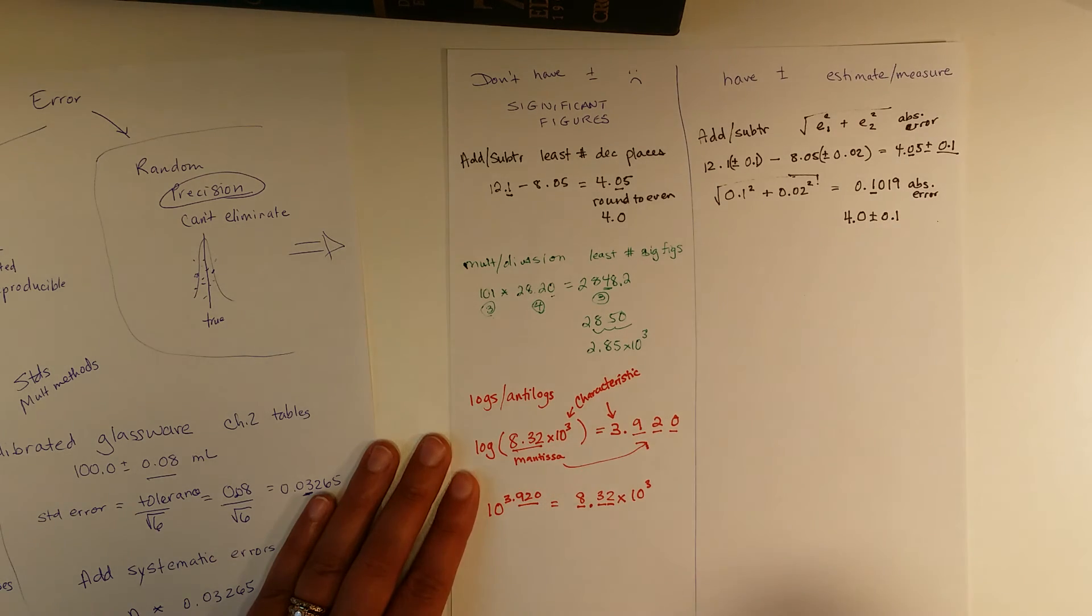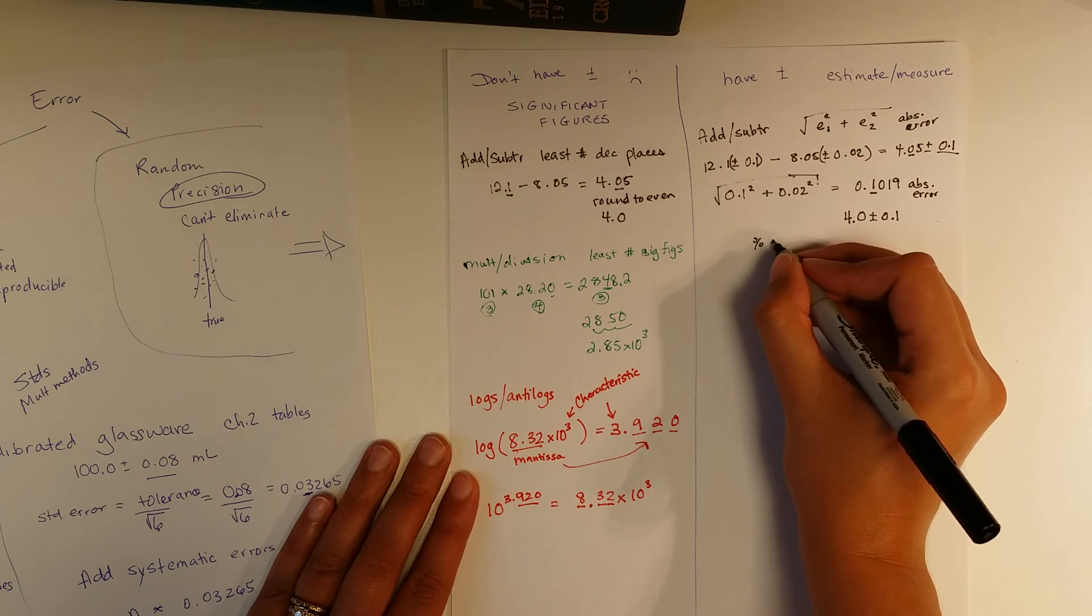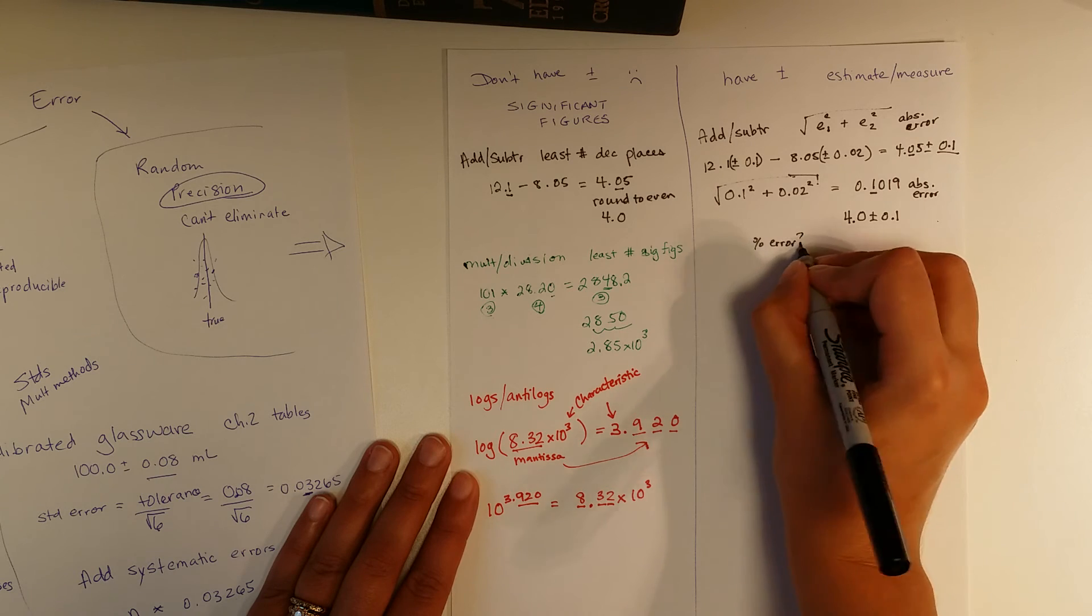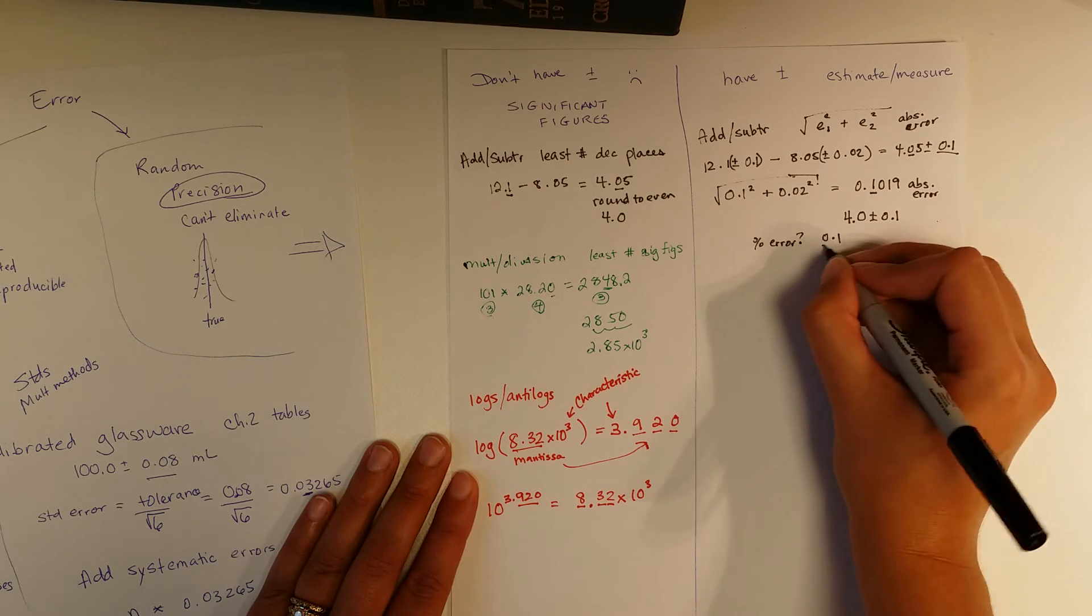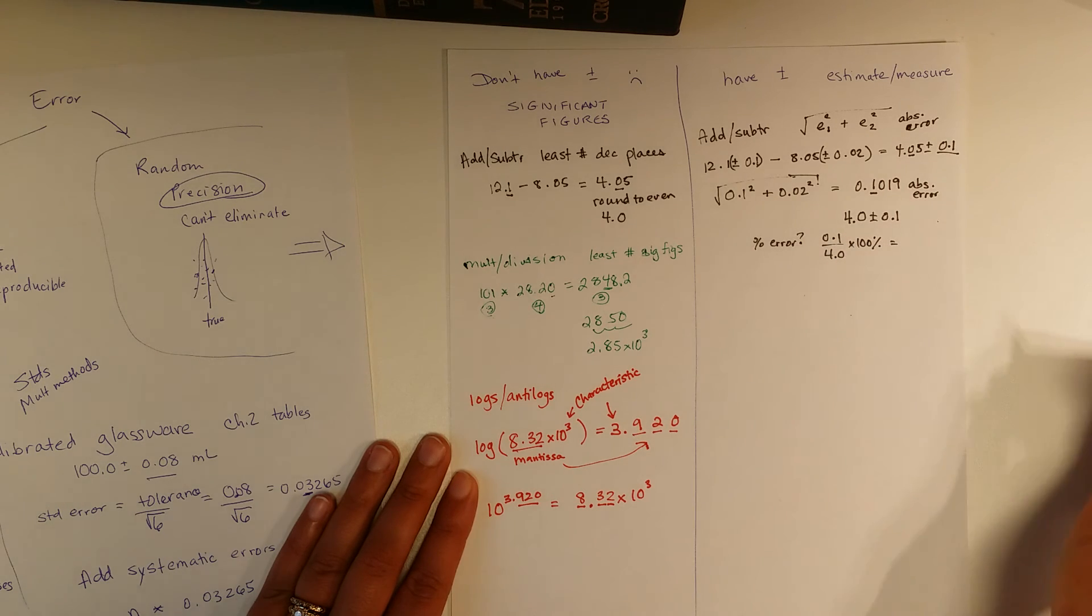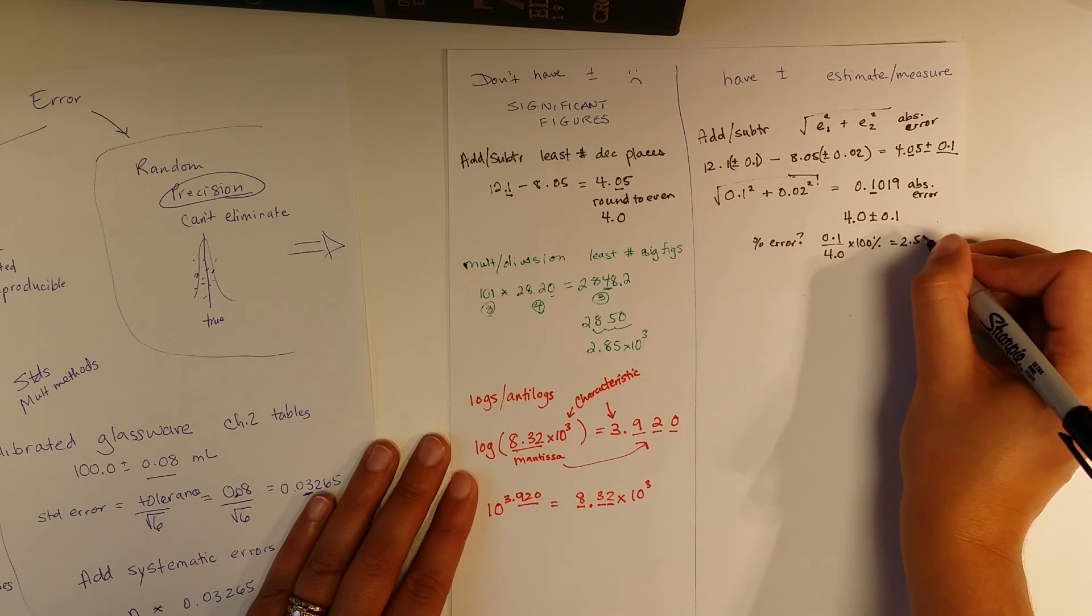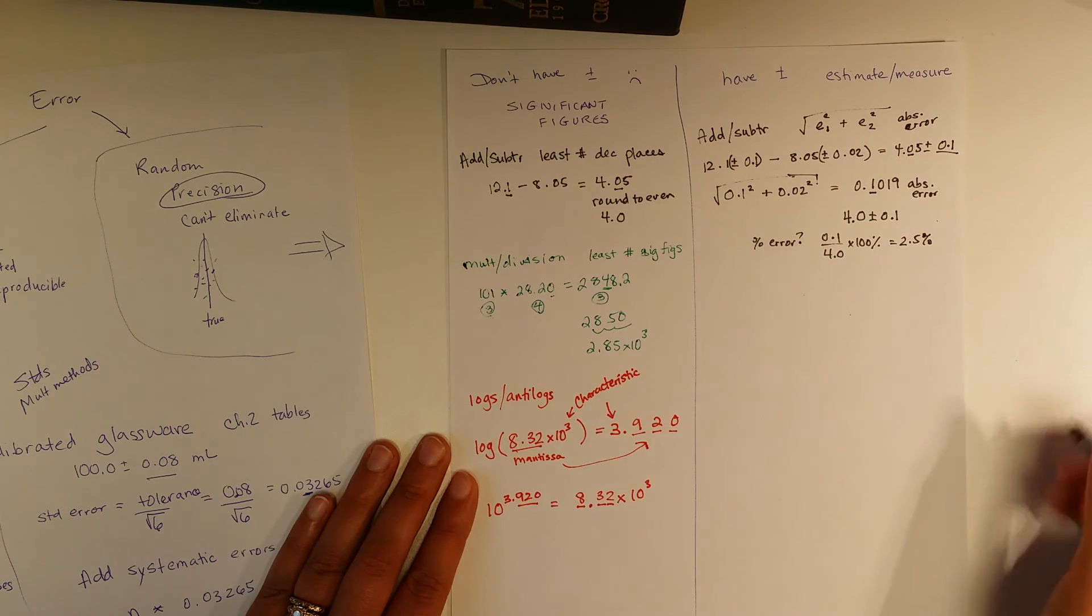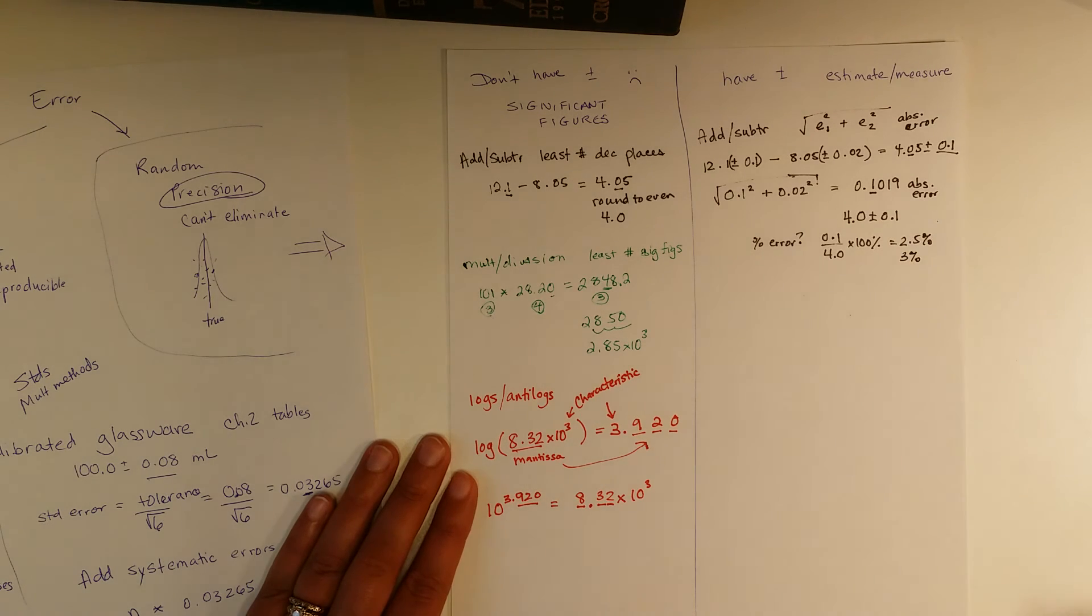Now, sometimes I might have asked you for a percent error. So what would the percent error on that be? You can say, well, what is 0.1 as a percent of 4? So you set that up, multiply it by 100%, and you're able to figure out what the percent error is. That comes out to be 2.5% error. Or you could say 3% error if we're using one sig fig.